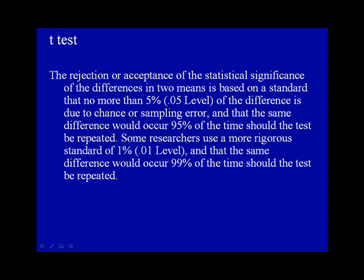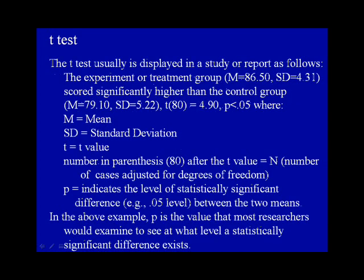The t-test usually is displayed in a study or report as follows: The experimental treatment group, M equals 86.50, SD equals 4.31,